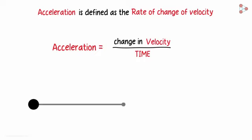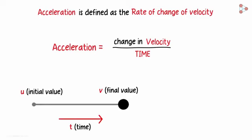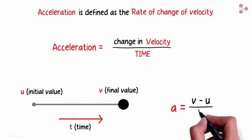If the velocity of an object changes from an initial value of u to the final value of v in time t, then the acceleration a can be written as v minus u over t.